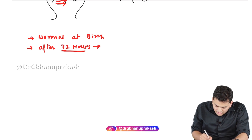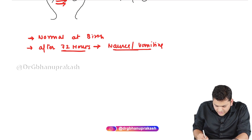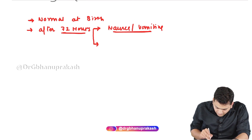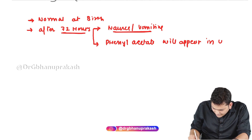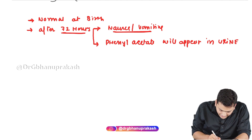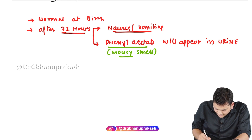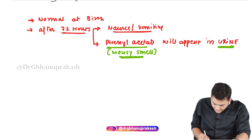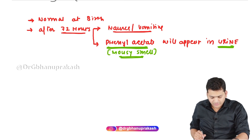After 72 hours, phenylalanine can no longer be metabolized, so the child will have nausea and vomiting. The ketones will appear in the urine — particularly phenylacetate, which has a very peculiar mousy smell. So the urine of this neonate will have a mousy odor. It is phenylacetate — not phenylalanine or phenylpyruvate — that is responsible for this mousy odor.